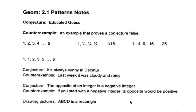We're going to be starting Chapter 2 with Patterns. First thing we have to discuss is a little terminology. A conjecture is one of the neat words we get to say in geometry — it basically means an educated guess. There are more official definitions, but that's what I call it: just an educated guess, using your noggin to figure out the best answer to what the pattern is showing you. A counterexample is an actual example that proves your conjecture false, and we'll talk about that a little bit down at the bottom.